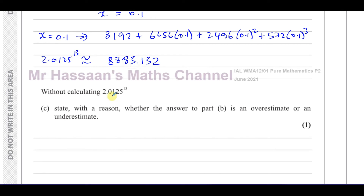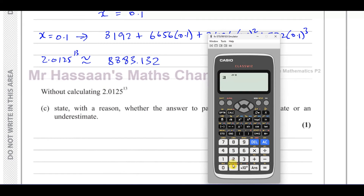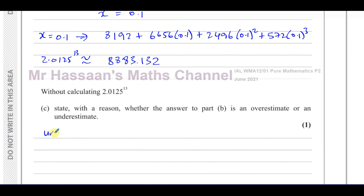We can confirm this by checking the real value. Calculating 2.0125 to the power of 13 gives almost the same result — up to 8883.1 it's identical, but then we have 3 here and 4 there, so our estimate is less. This confirms it is an underestimate.